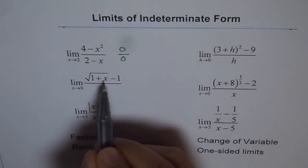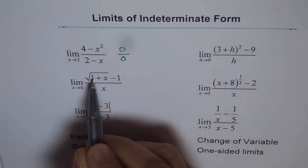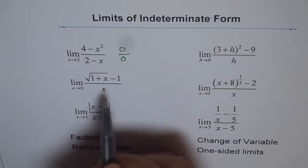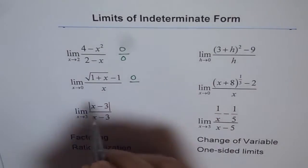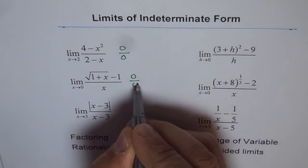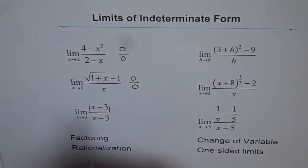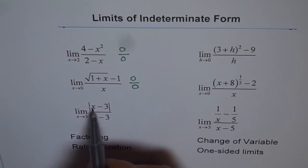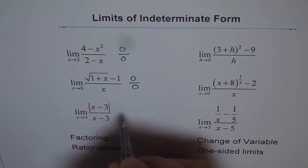Square root of 1 is 1, and 1 minus 1 is 0. If I put x as 0 I again get 0. If I put 3 in this, absolute value 3 minus 3 is 0, and 3 minus 3 is 0. We again get 0 over 0.